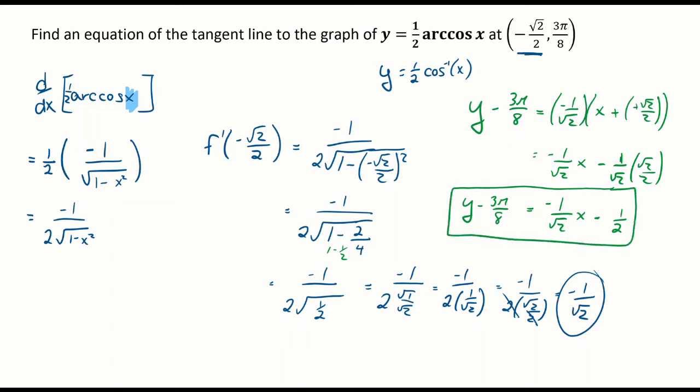It's perfectly fine to leave the equation of the line like this. I don't want to continue further because I'd have to add 3π/8 and negative 1/2, which would have to be a decimal. So it's a nicer form like this. There we go: found the derivative of an inverse trigonometric function in order to find the equation of a tangent line.